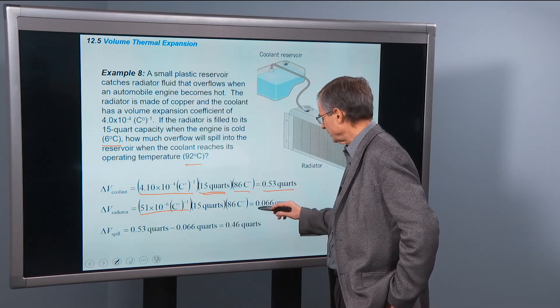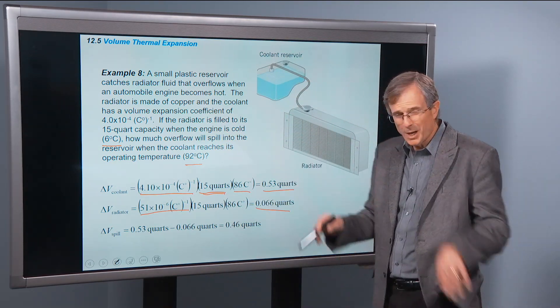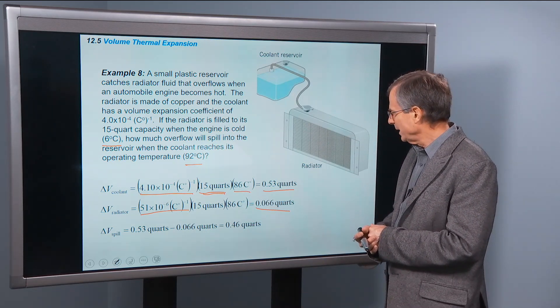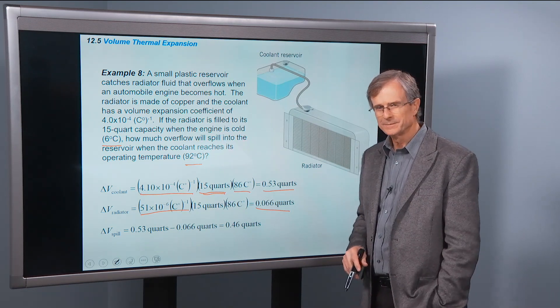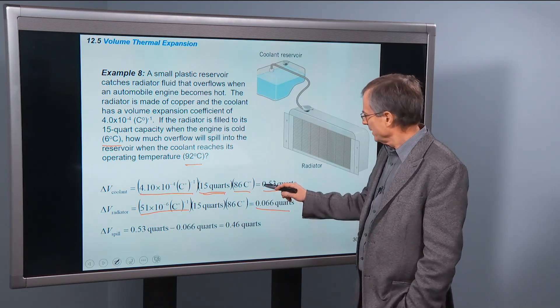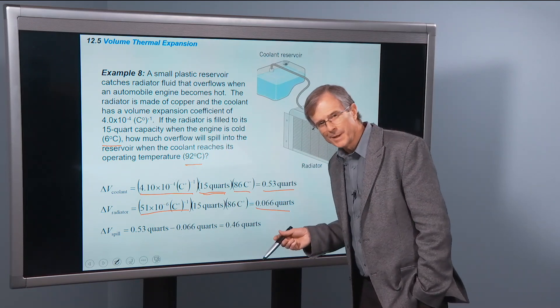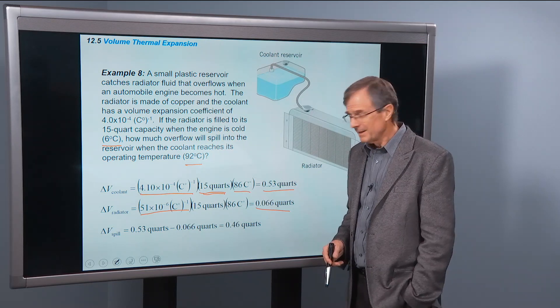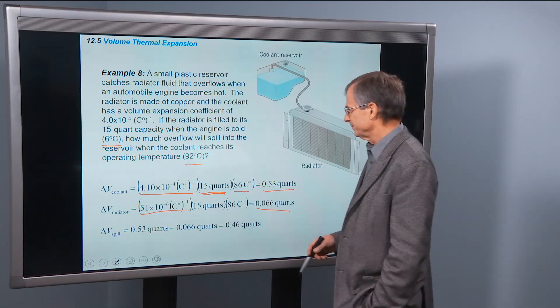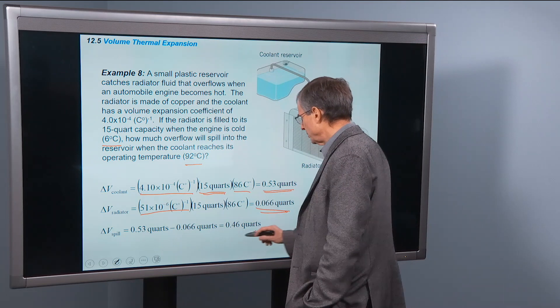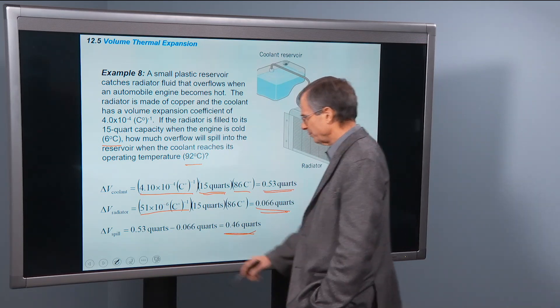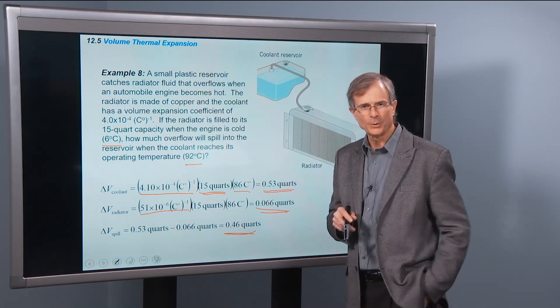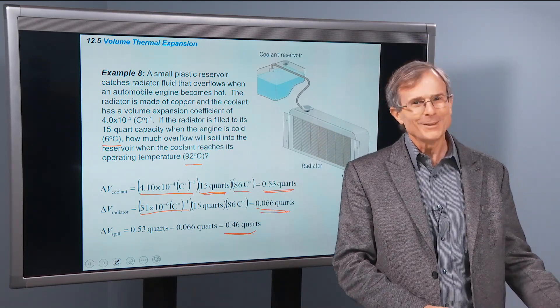So the volume of the radiator, the copper, actually increases only by 0.066 quarts, whereas the volume of the coolant that goes in the radiator increases by 0.5 quarts. That's a lot. And the difference between these two, 0.53 minus 0.066, that is how much is going to spill into the coolant reservoir. Practical application.